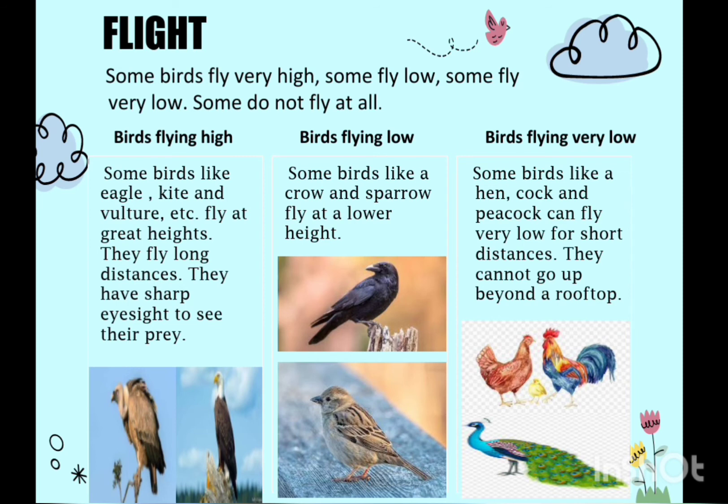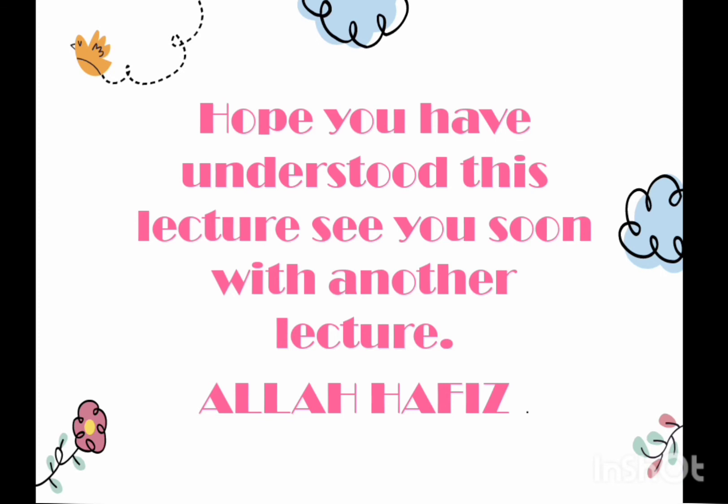Birds flying low: Some birds like crow and sparrow fly at a lower height. Birds flying very low: Some birds like hen, hawk, and peacock can fly very low for short distances. They cannot go up beyond a rooftop.